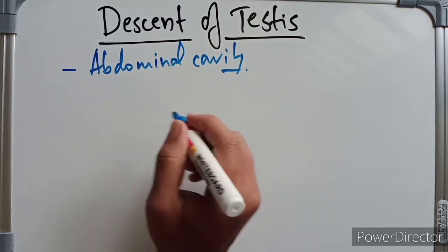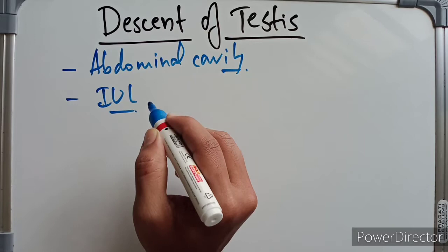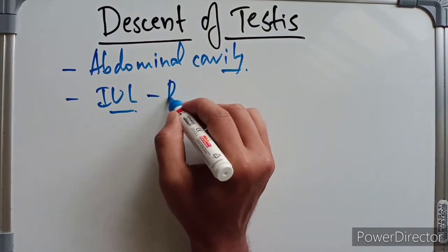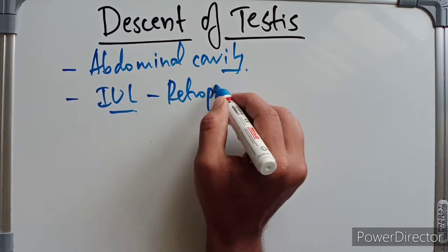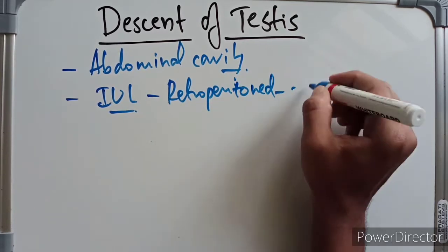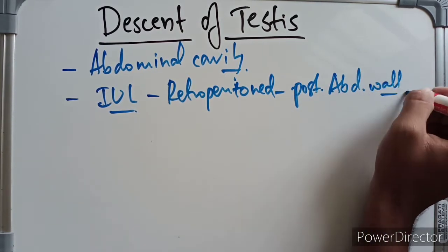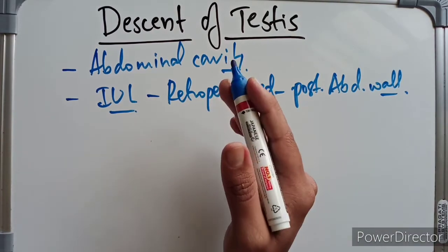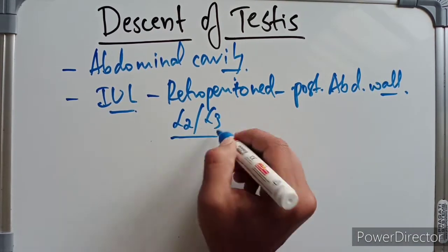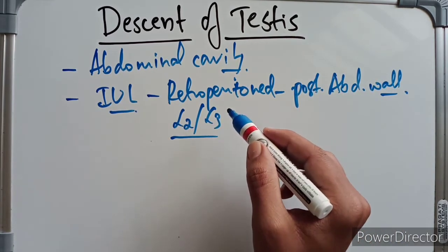At an early stage of intrauterine life, the developing testis lies in the retroperitoneal region on the posterior abdominal wall, in the upper abdomen on the medial side of the mesonephros, at the level of L2 or L3 vertebra.